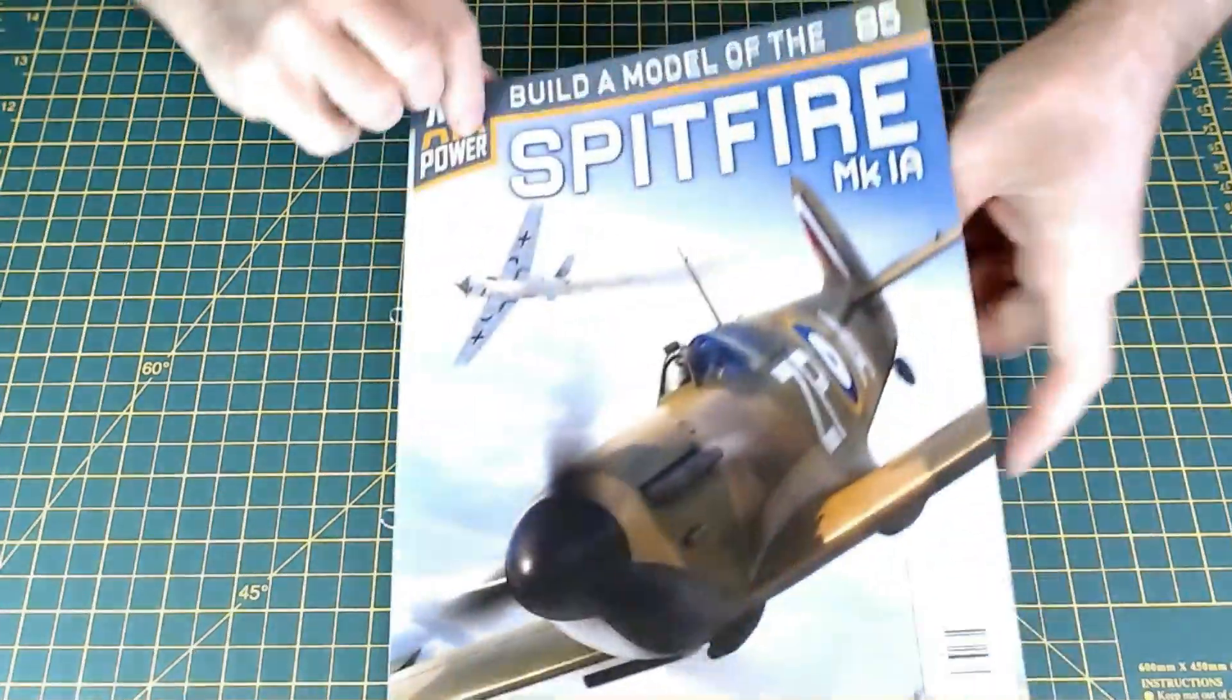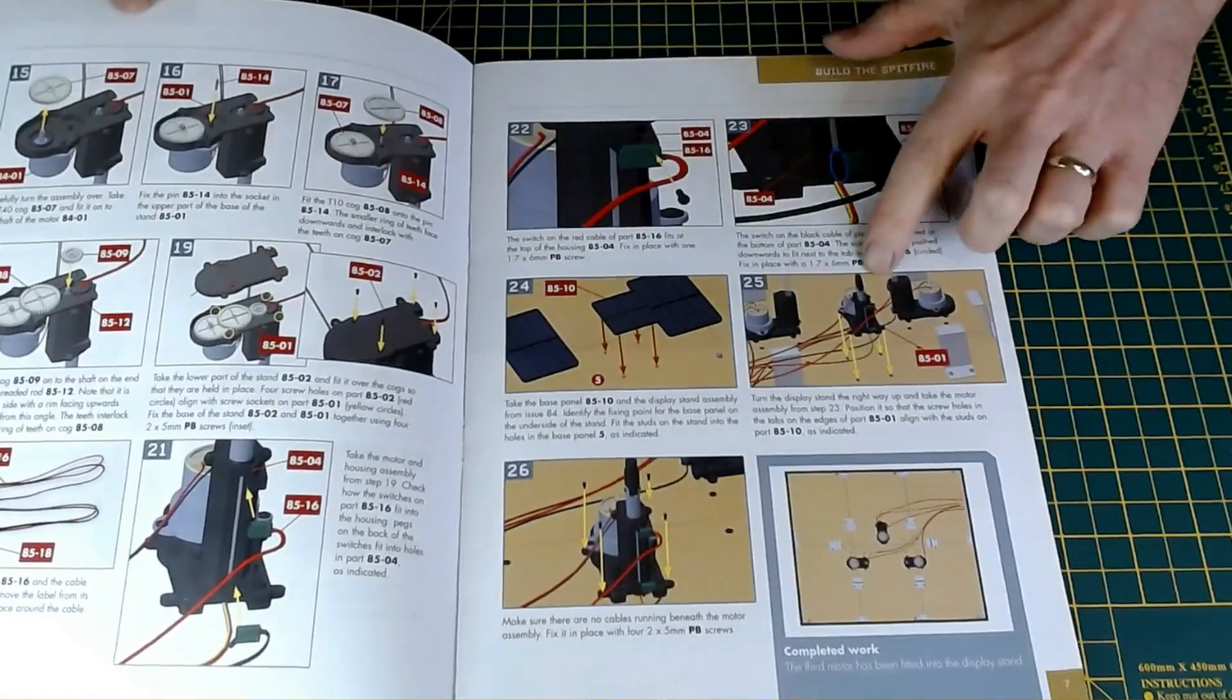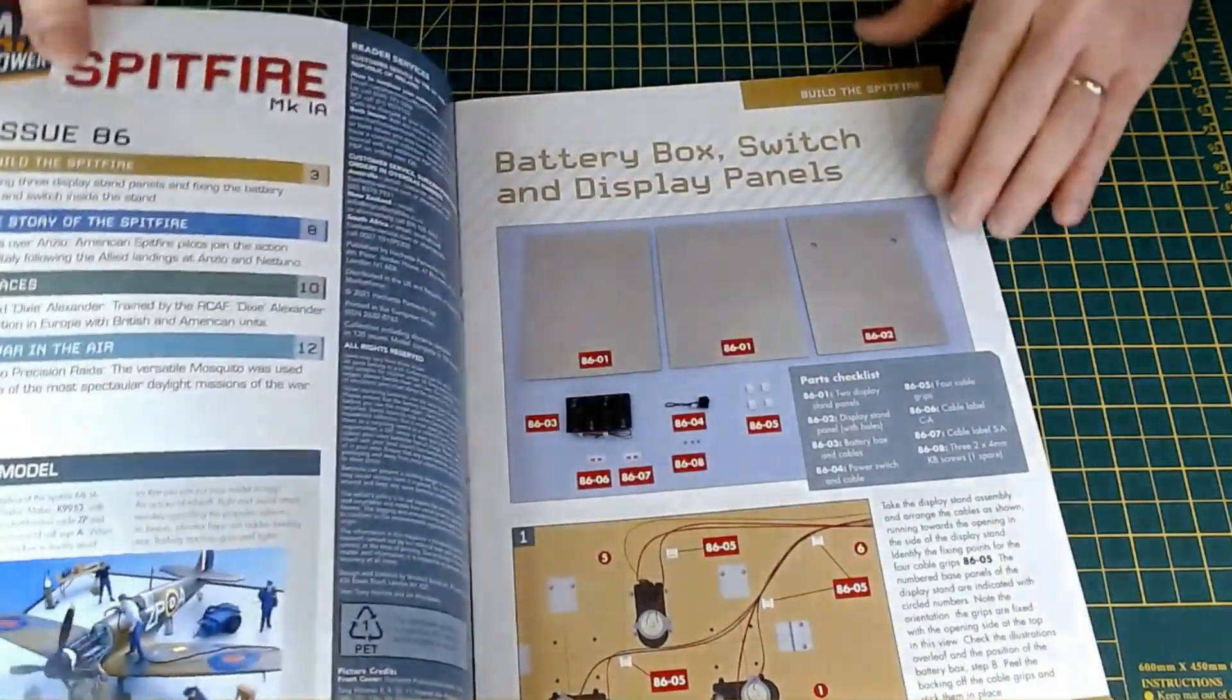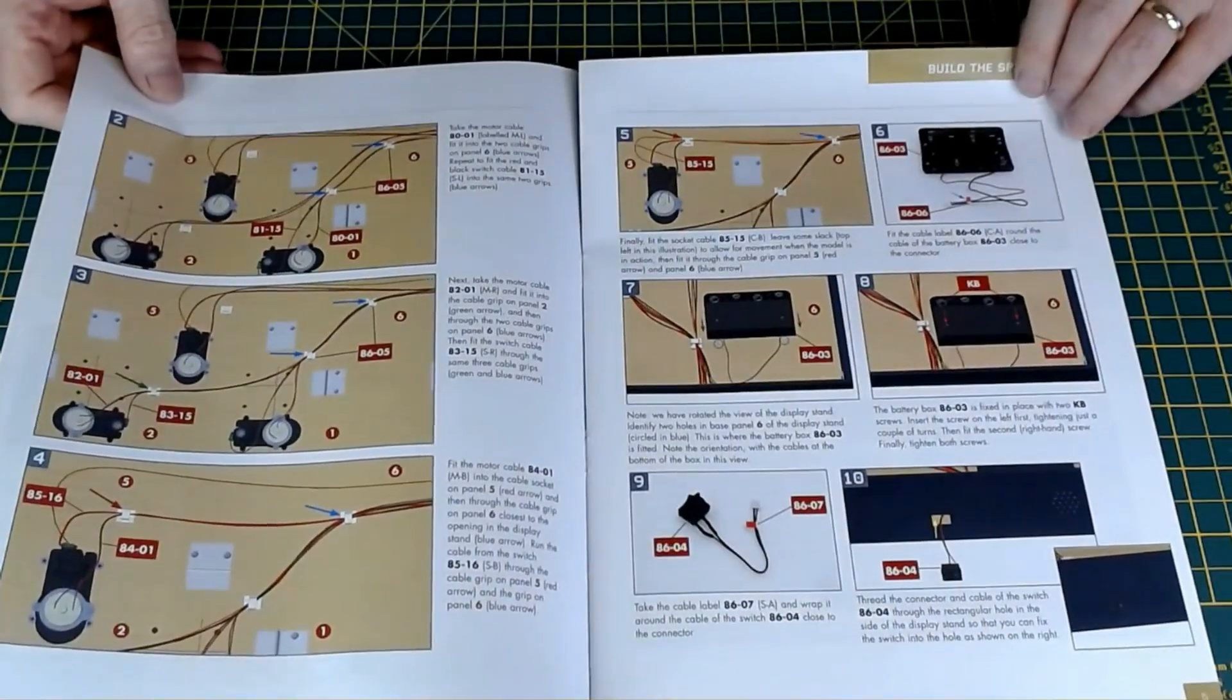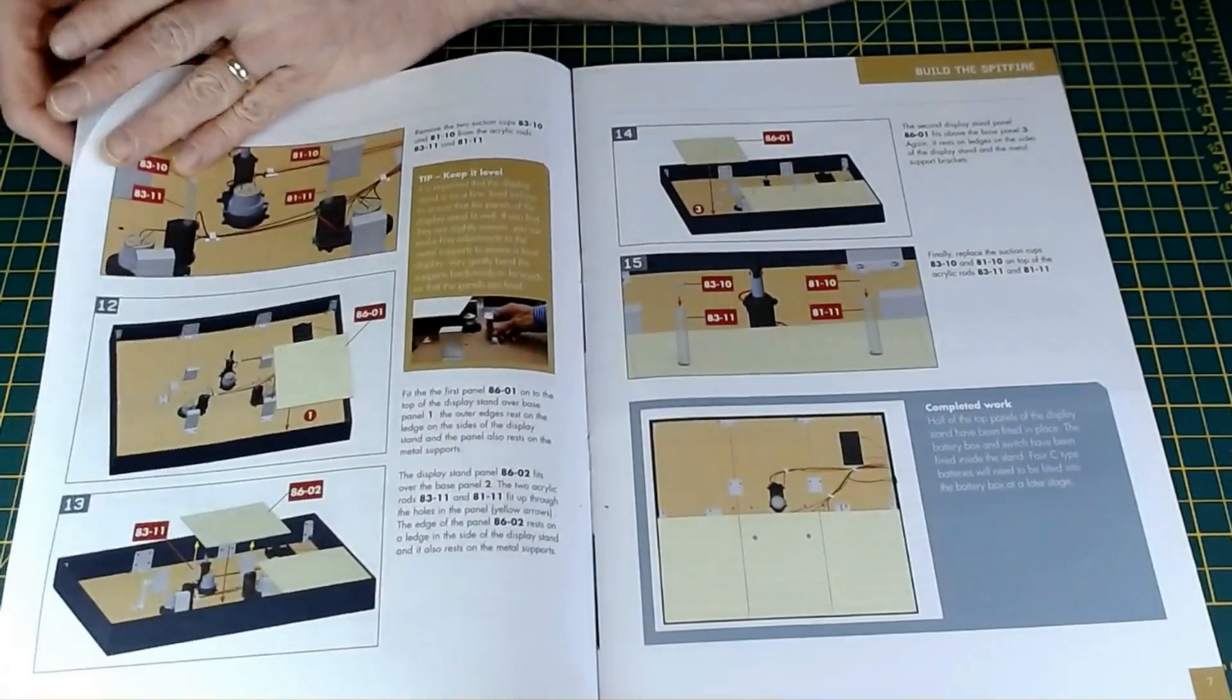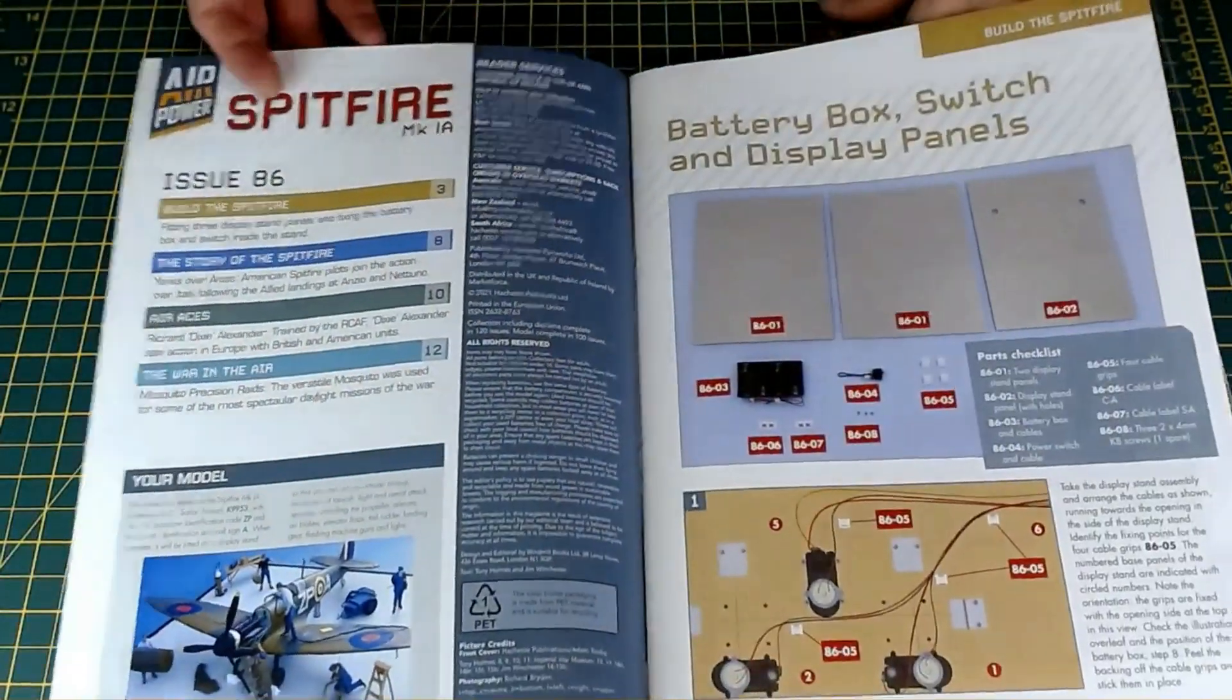So that was it for issue 85—getting that last motor display stand actuator sorted, the one with a plug that's going to obviously fit into the aircraft. Issue 86 is coming. Battery box, switch, and display panels. So just fitted a battery box, the main switch for it, and then the first couple of panels that are going to sit on it. That'll be issue 86 and that'll be coming up soon.